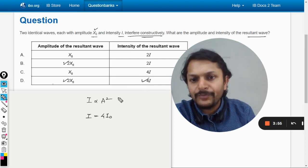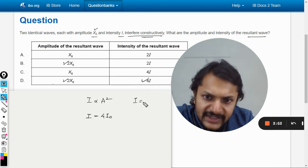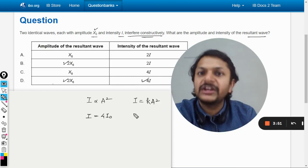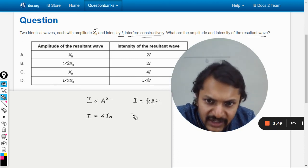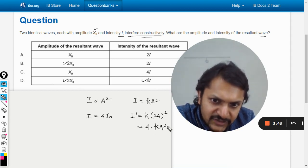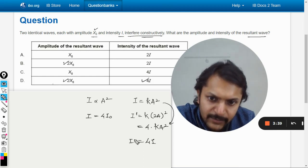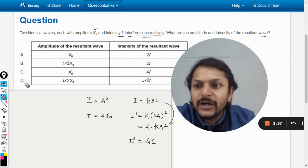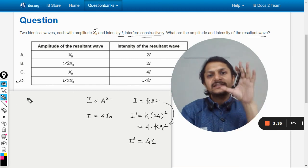So, intensity is four. Or you can do it like this also. You just have a K, you create a formula. If you are not able to understand, this will be I dash and this is another. So, you can say four times K A squared. This I will be substituted here. It will become four times I. Hence, the intensity will become four times. This is the formula.